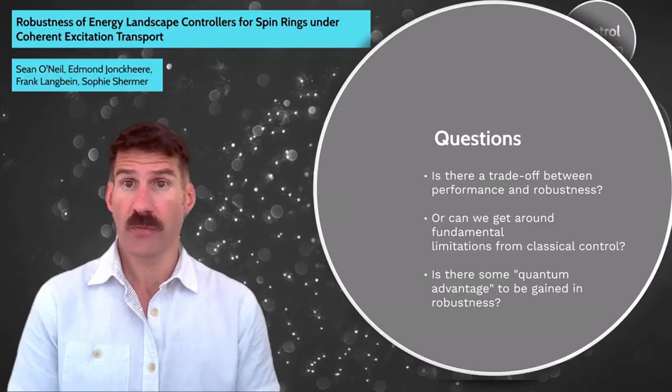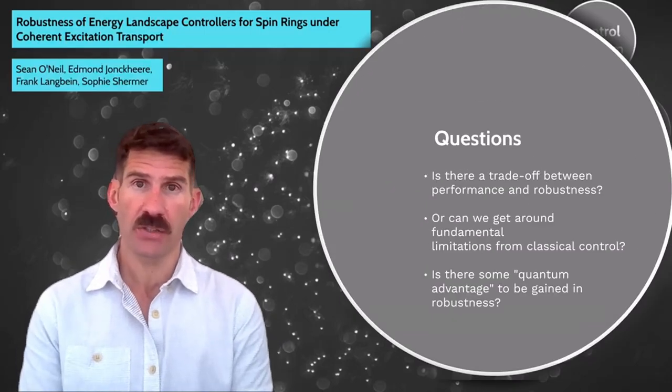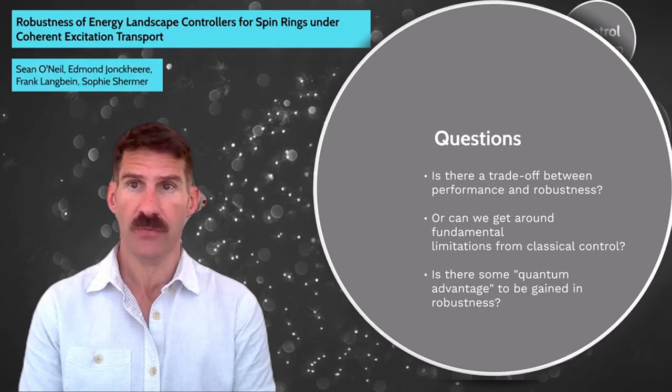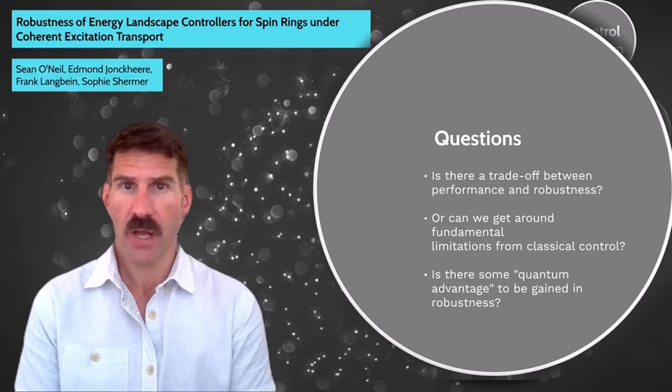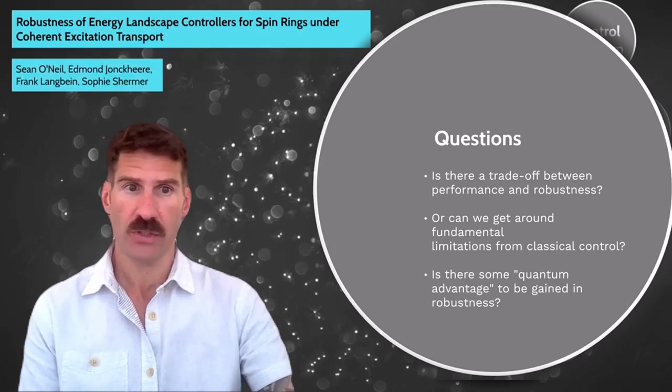Our goal in this paper is to investigate whether the fundamental limitations on performance and robustness from classical feedback control carry over to quantum systems, particularly for state transfer in spin rings, or is there some manner to work around that performance robustness trade-off?